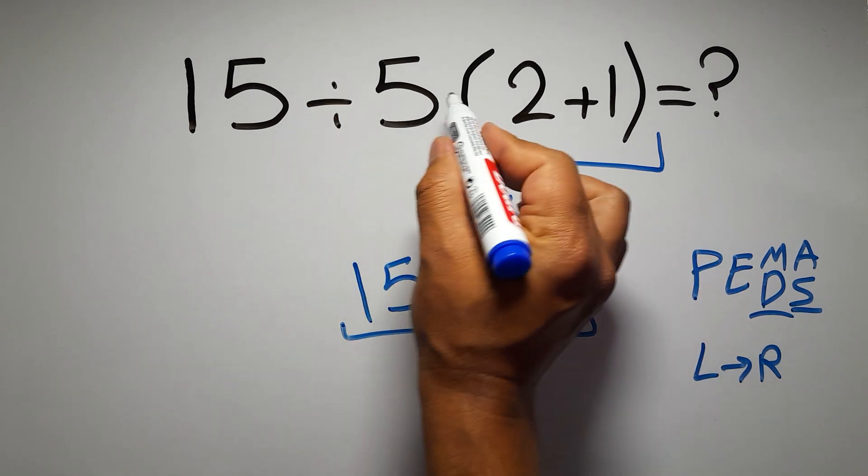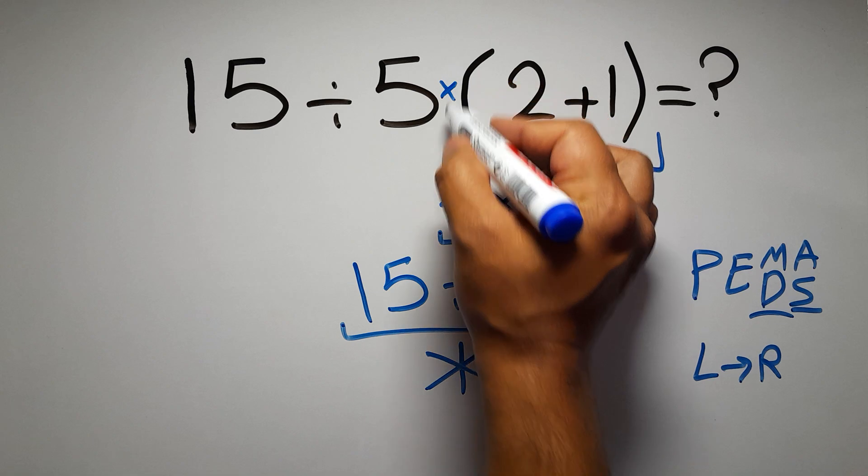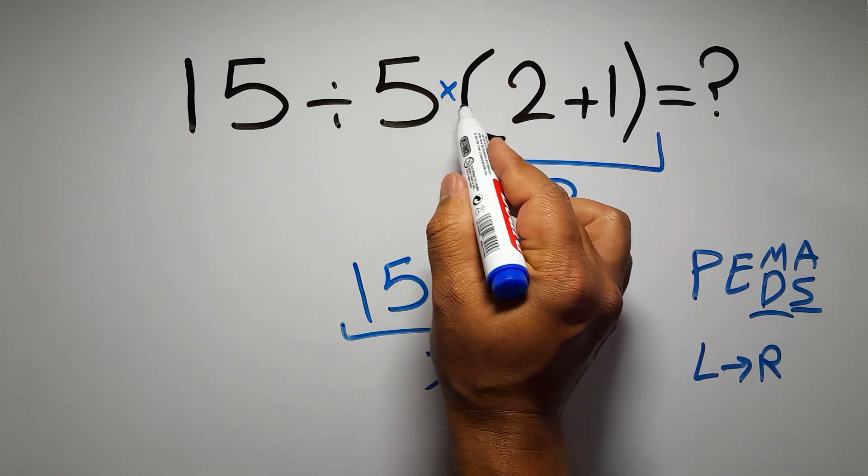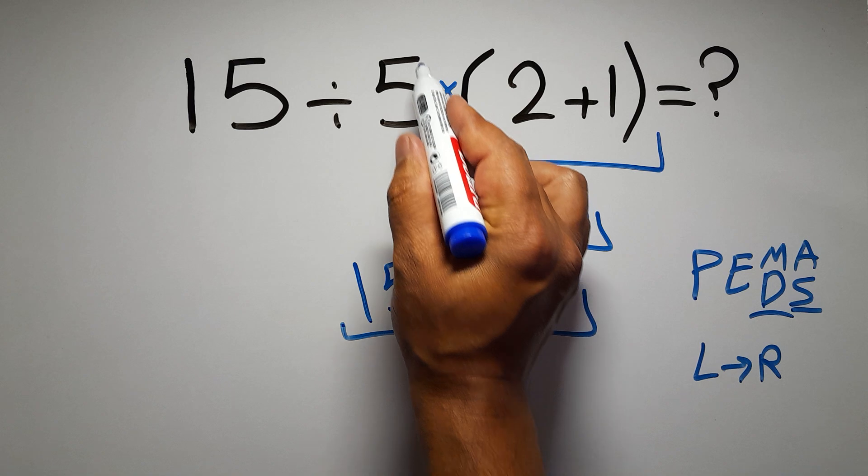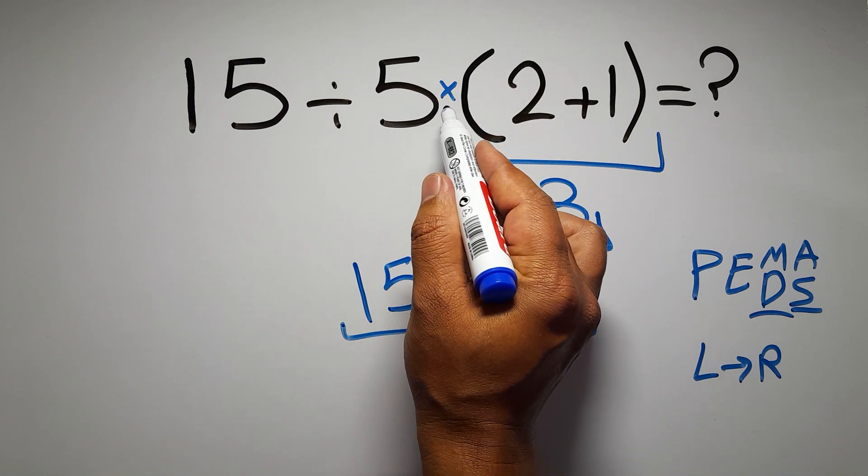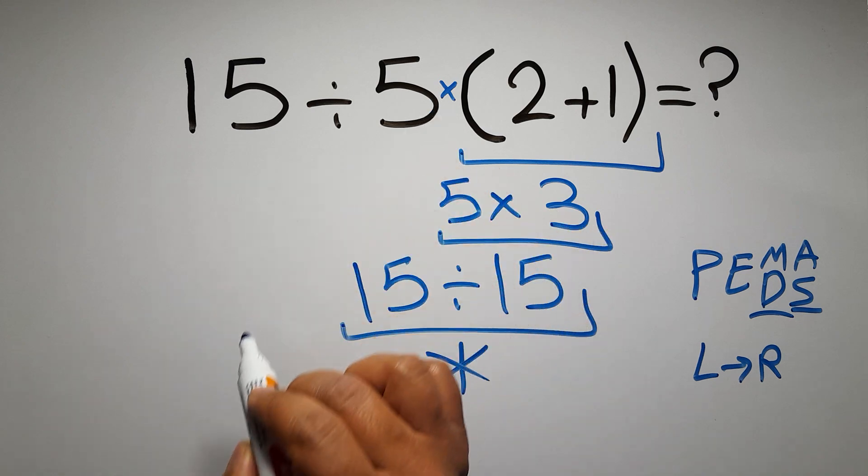In this expression, we have one division, one multiplication, and one parentheses. Inside these parentheses, we have one addition. Here we have a multiplication, because in mathematics, when a number is placed next to parentheses, it means multiplication, and we usually don't write a multiplication sign for brevity.